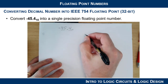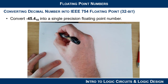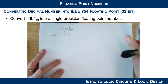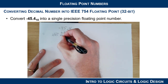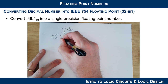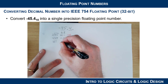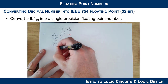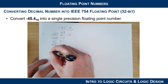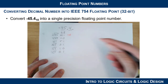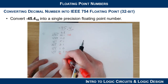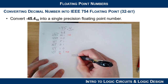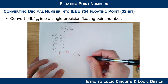Let's do the conversion manually so we can see the repeating pattern on the fractional part. For the whole number 45, we divide by 2 and track the quotient and remainder — the remainders give us the binary digits from LSB to MSB. 2 goes into 45: 22 remainder 1; into 22: 11 remainder 0; into 11: 5 remainder 1; into 5: 2 remainder 1; into 2: 1 remainder 0; into 1: 0 remainder 1. Reading the remainders from bottom to top gives us 101101.